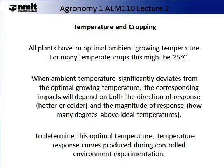Let us talk about how temperature and cropping interact. You can think of optimal ambient growing temperatures as the ideal temperatures that a plant grows at. The optimal temperature will not inhibit any other aspect of plant growth or development. For many temperate crops, the optimal temperature is around 25 degrees C. When ambient temperature significantly deviates from the optimal growing temperature, the corresponding impact will depend on both the direction of the response — that is, is the temperature hotter or colder — and the magnitude of response, meaning how many degrees above or below the ideal temperature. To determine this optimal temperature, temperature response curves have been produced during controlled environmental experimentation.